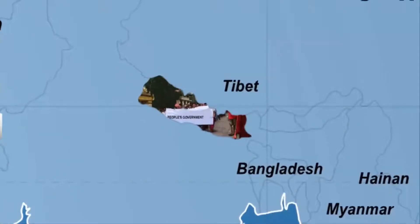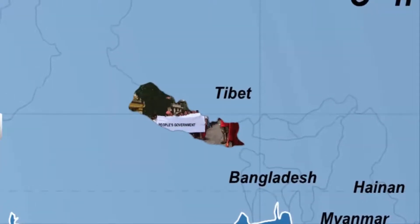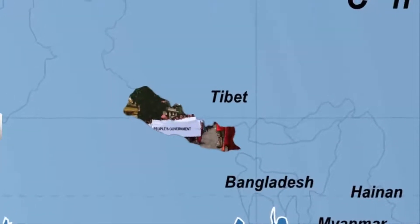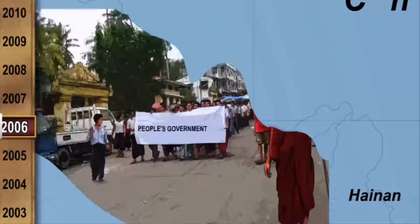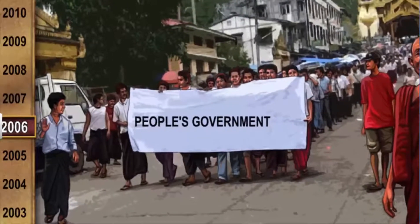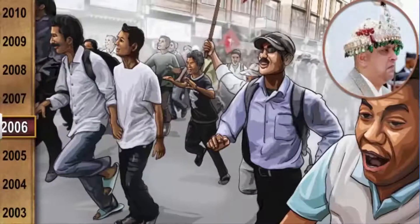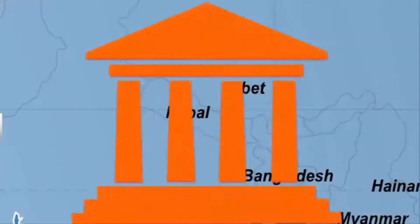The people of Nepal rose in revolt of this act but could not make a difference at first due to lack of organization. In April 2006, Nepal witnessed a popular movement which was aimed at regaining control over the government from the king. Political parties joined hands and a new coalition was formed — the Seven Party Alliance, or SPA.